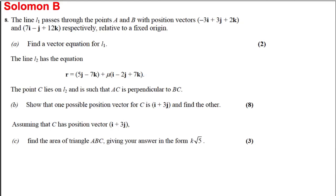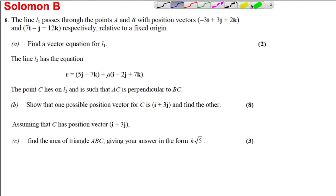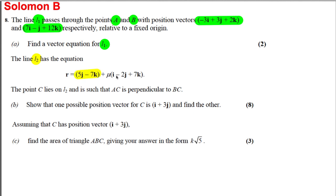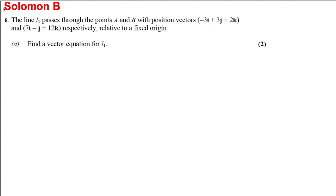Here's another question on vectors. We're told that line L1 passes through points A and B, given as position vectors in space, and we're asked to find the vector equation of L1. Then line L2 has a given point and direction. Point C lies on L2 such that AC is perpendicular to BC. We need to show one possible position vector of C, find the other, and then find the area of triangle ABC in the form K√5.